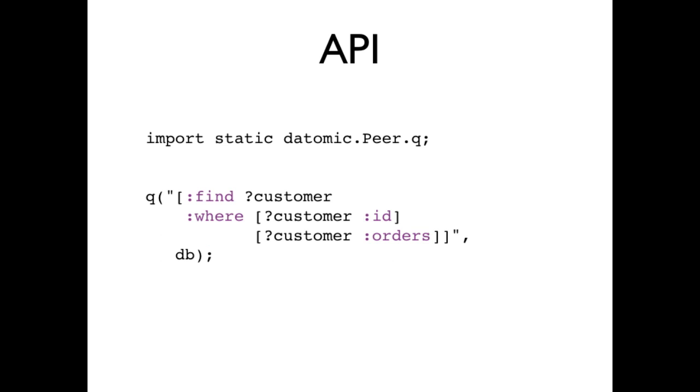Now we can plug this query into the API, and see calling it from Java. Programs will make extremely heavy use of query, so it has been given the short name Q. The first argument to query is the query expression itself, followed by one or more inputs. In this example, you see only a single input, a value of a database.